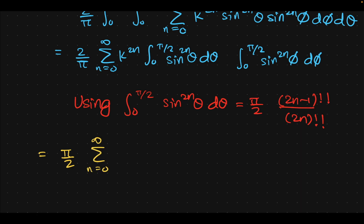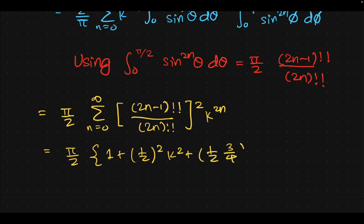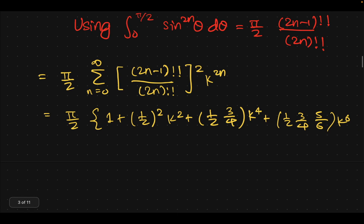Using that formula involving double factorials — where instead of multiplying by successive lower integers you jump by two — we replace everything. So we have π/2 times a sum from 0 to infinity of those integrals squared times k^(2n). Writing it explicitly: K(k) = π/2 · [1 + (1/2)²k² + (1/2·3/4)²k⁴ + (1/2·3/4·5/6)²k⁶ + …]. That's the final answer for K(k).